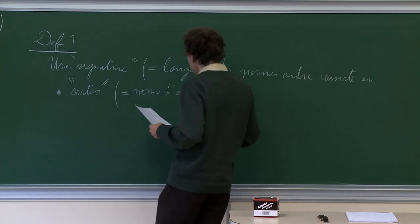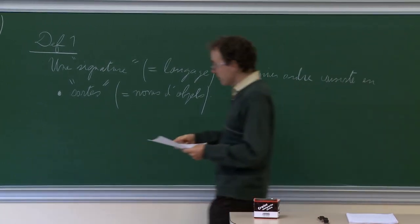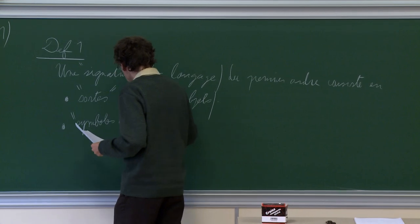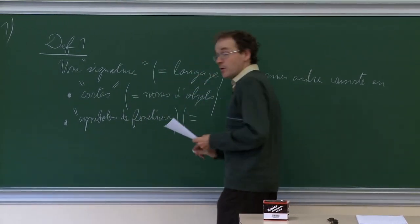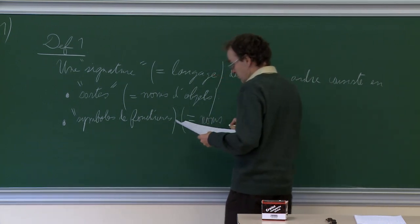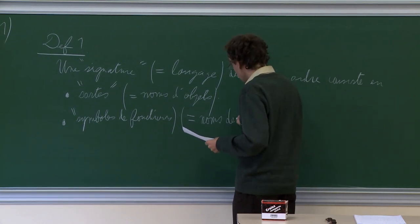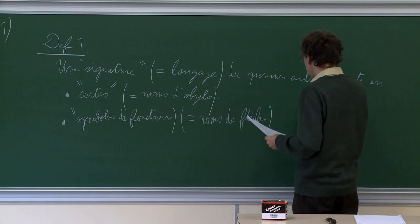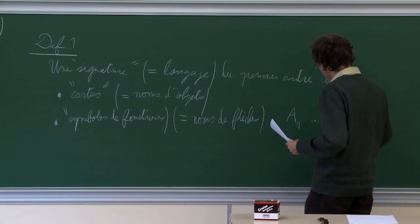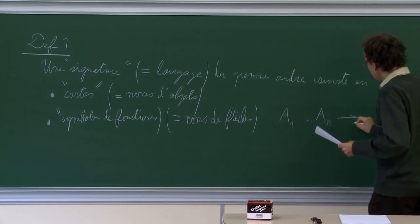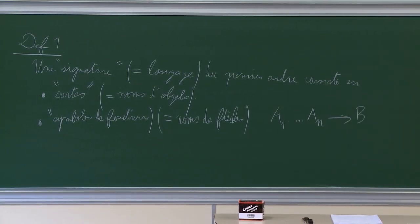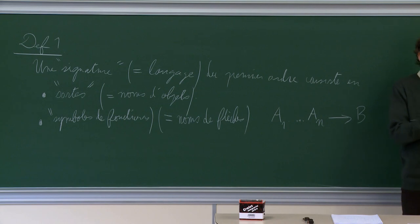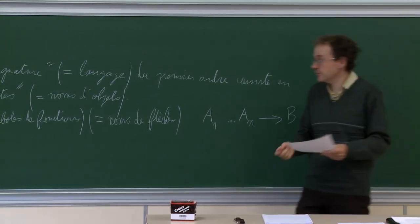For example, if you want to introduce the theory of groups, you say you have a group — that is a name of objects. Then there are symbols of functions. This is first order. There can be another sort B, or if there is no sort — in which case we are talking about symbols of constants. For example, if we want to define the neutral element in a group, it will be given by a symbol of constant.